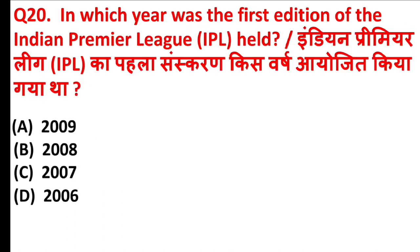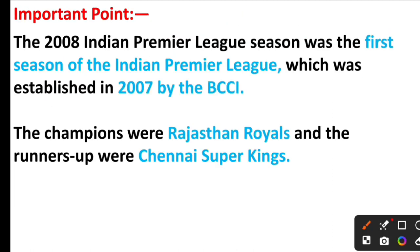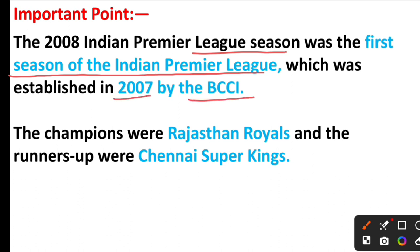In which year was the first edition of the Indian Premier League held? The answer is Option B, 2008. The 2008 Indian Premier League season was the first season of the IPL, which was established in 2007 by the BCCI. The champions were Rajasthan Royals and the runners-up were Chennai Super Kings.